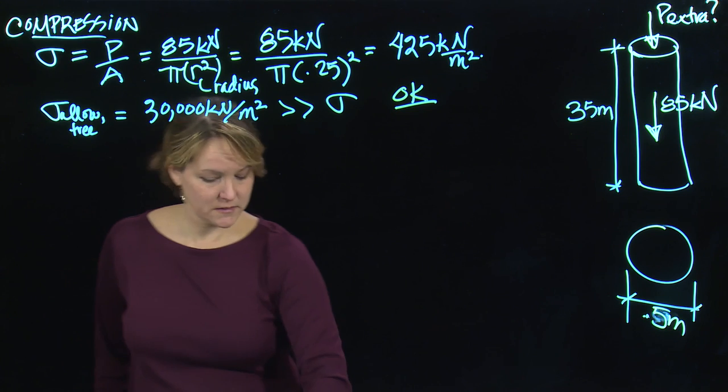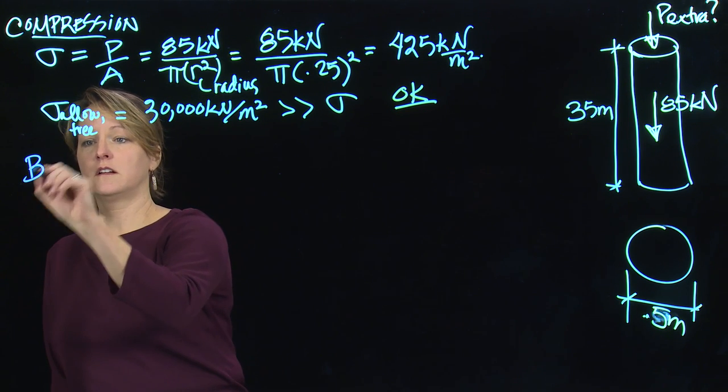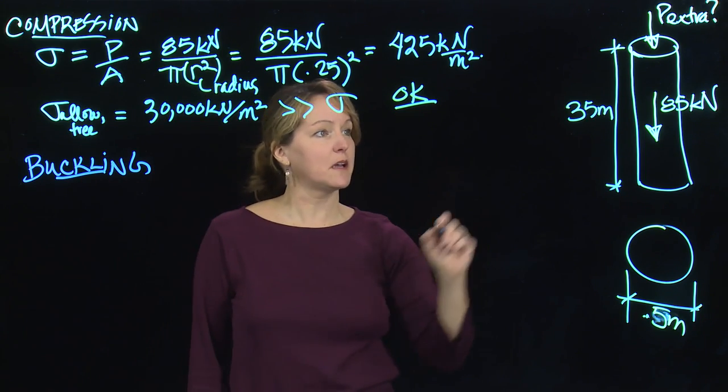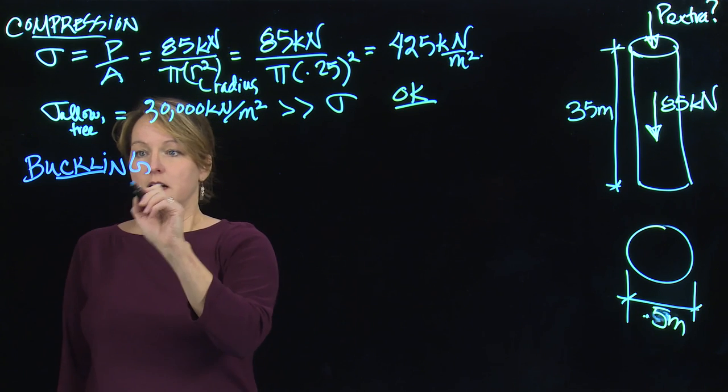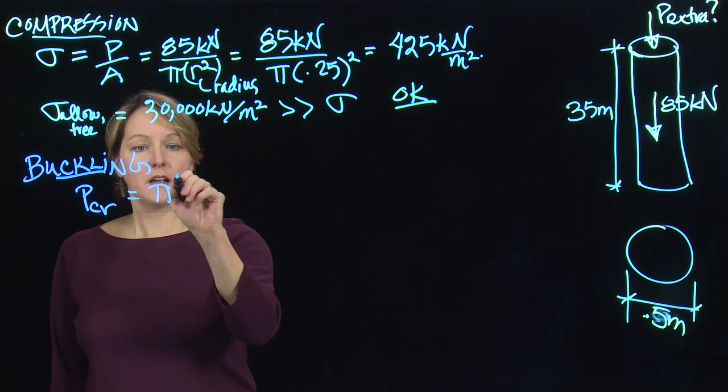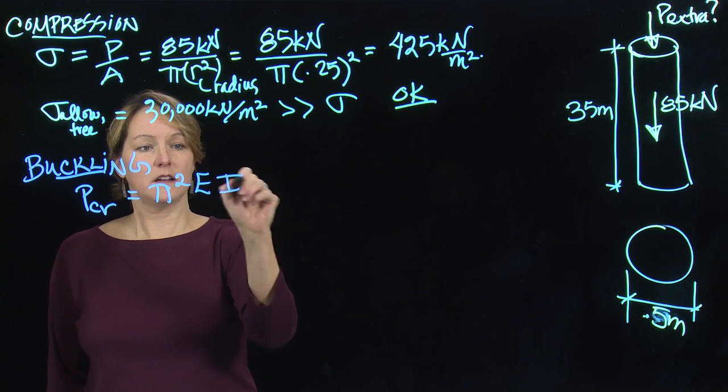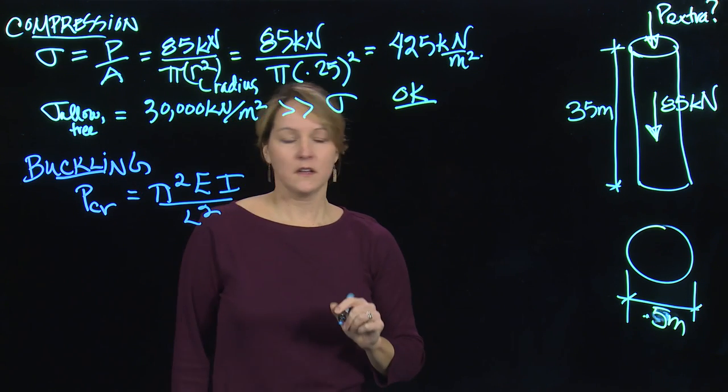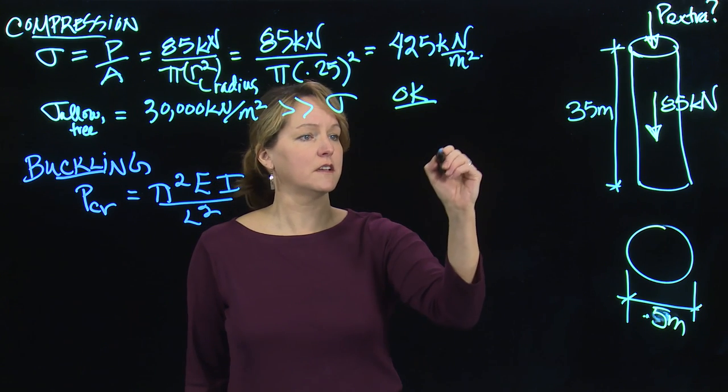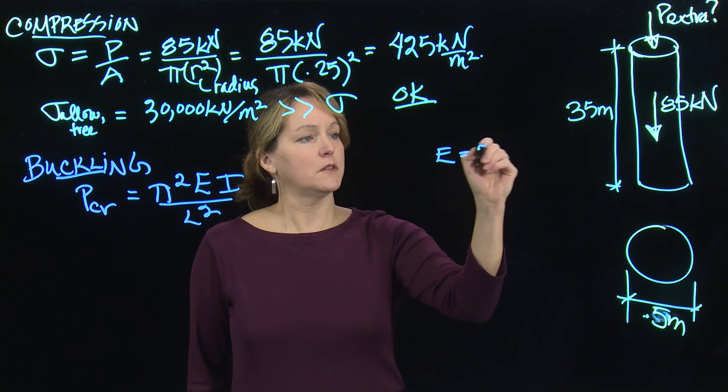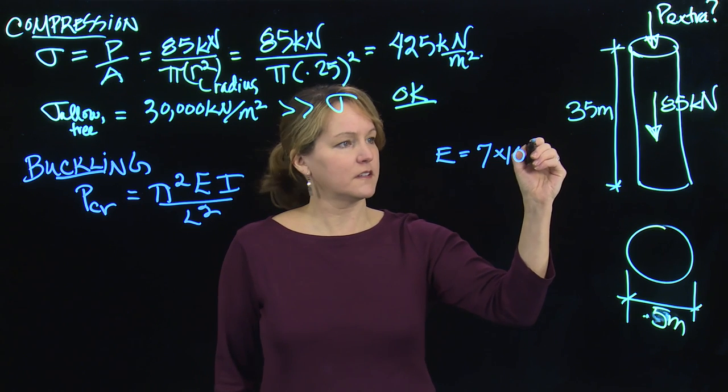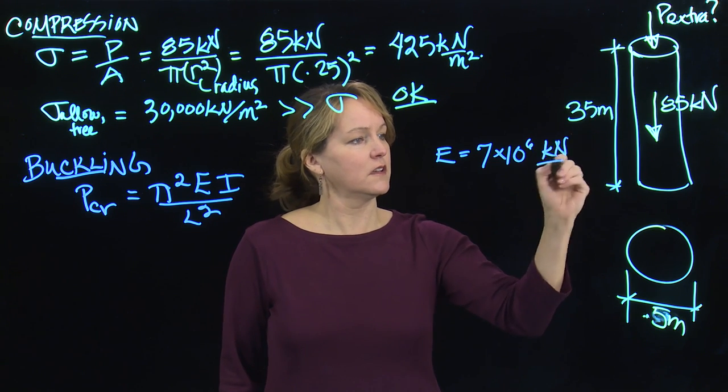But we also need to check buckling. Let's switch here and look at buckling. This is a tall tree, so I expect buckling might be a bit of an issue. I will need to calculate the critical buckling load. That is pi squared EI over L squared. I'm going to need those different values. E is the modulus of elasticity of the tree. For E, I'm going to use 7 times 10 to the 6th kilonewtons per meter squared.